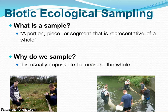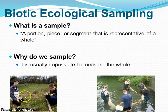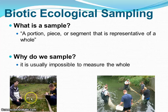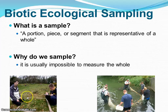Biotic ecological sampling — what is really a sample when we're talking about this? Well, it's going to be a portion, a piece, or segment that represents an entire whole. So these kids right here are using what's called a quadrat — that's this box area — and they're going to use this sample and try to extrapolate the information to represent the whole field.